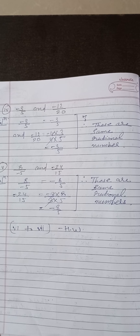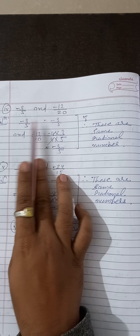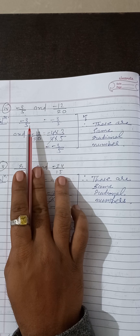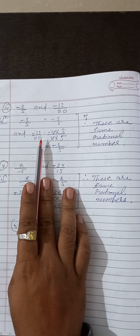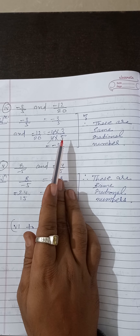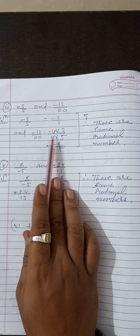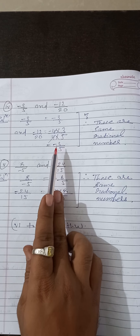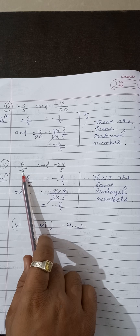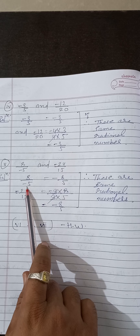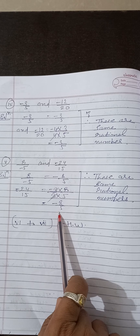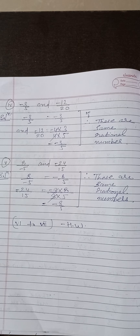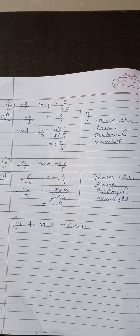Question number 4 continued: minus 3 upon 5 and minus 12 by 20. Minus 3 by 5 is already in simplest form. Simplify minus 12 by 20: divide by 4 to get minus 3 by 5. Both are the same rational number. For 8 upon minus 5 and minus 24 by 15: rewrite as minus 8 upon 5, simplify minus 24 by 15 to get minus 8 by 5 — these are the same. Students, here we are going to finish this lecture. Next lecture we will cover the rest of the questions and Exercise 9.2. Thank you very much.